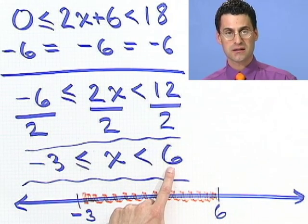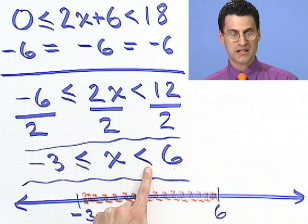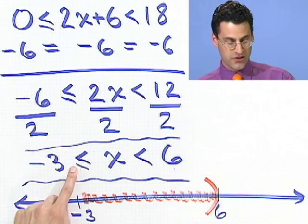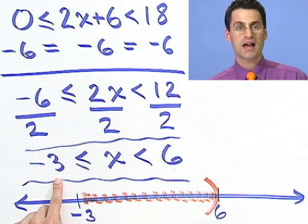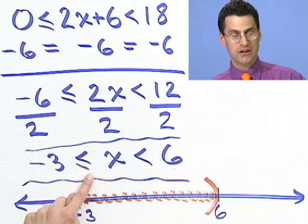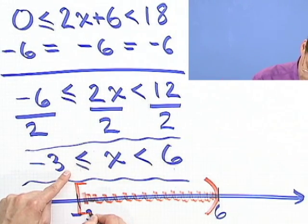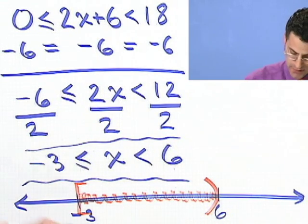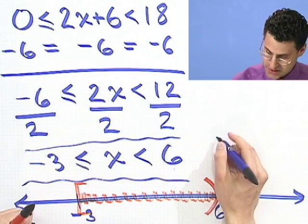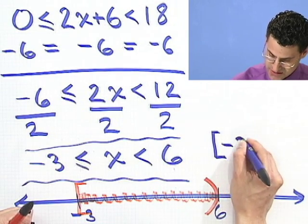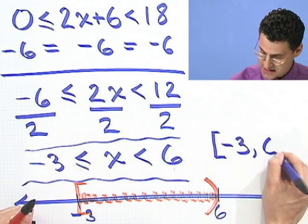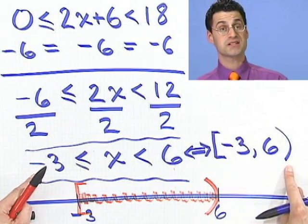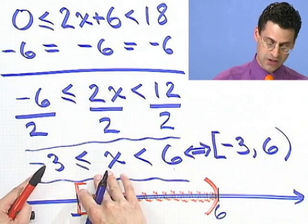What about the endpoints? Do I include 6? No, I don't include 6 because there's no equal sign here. So I put an open parentheses. Do I include the minus 3? Absolutely, because there's an allowable equal sign there. So, in fact, I could write this answer as, in interval notation, as minus 3 with a bracket, 6 with a parentheses. These two statements are identical. This statement and this statement are the same. This is interval notation. This is inequality notation.